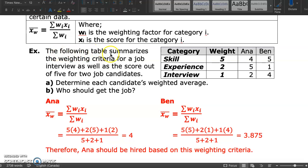The following table summarizes the weighting criteria for a job interview, as well as the score out of five for two job candidates, Ana and Ben. Notice that each of these different categories - skill, experience, interview - have different weights. This group is really interested in the skill of the individuals. And this is their score for each of the candidates. Determine each candidate's weighted mean.